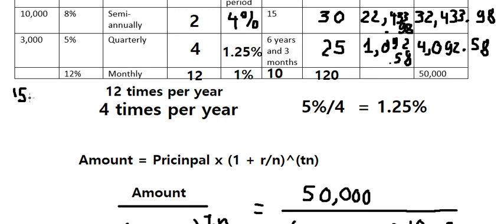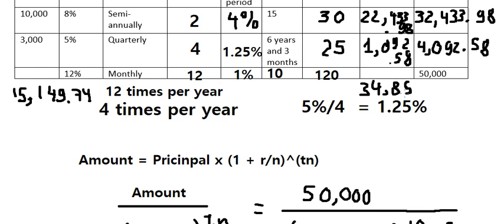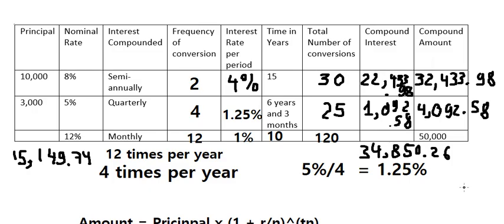We put 15,149.74 as the principal. Compound interest equals 50,000 minus 15,149.74, which is 34,850.26. This is the final answer. That is the end — thank you for watching.